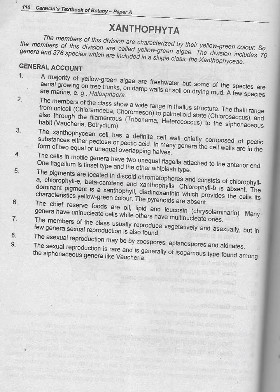Number two: the members of the class show a wide range in thallus structure. The thallus ranges from unicellular — such as Chloromoeba and Chromulina — to palmelloid state such as Chlorosaccus, through filaments like Tribonema and Heterococcus, to the siphonaceous habit seen in Vaucheria and Botrydium.